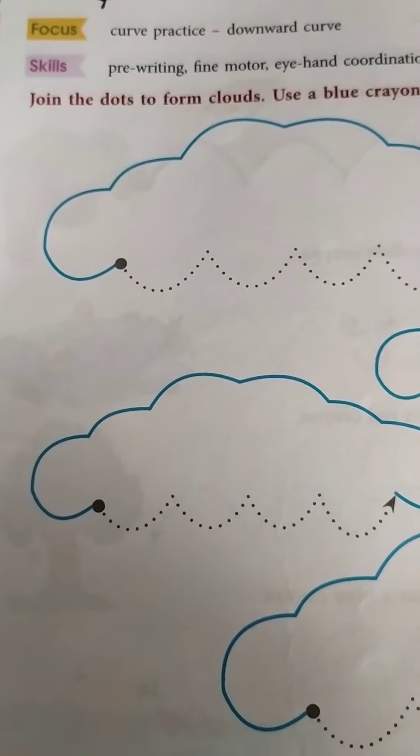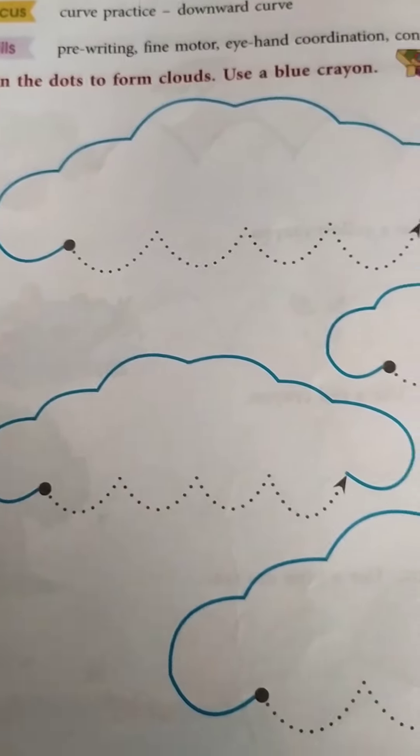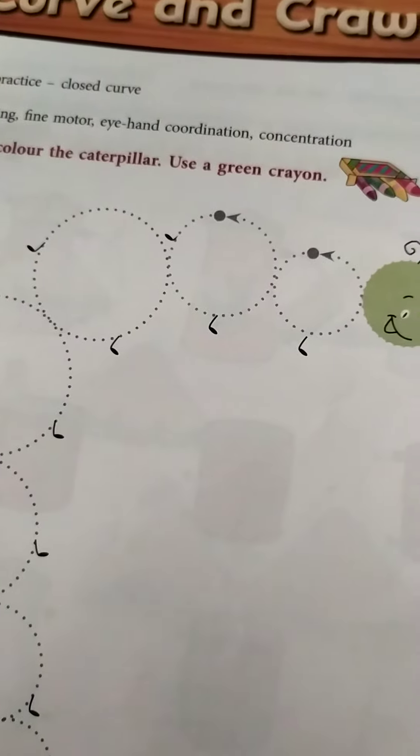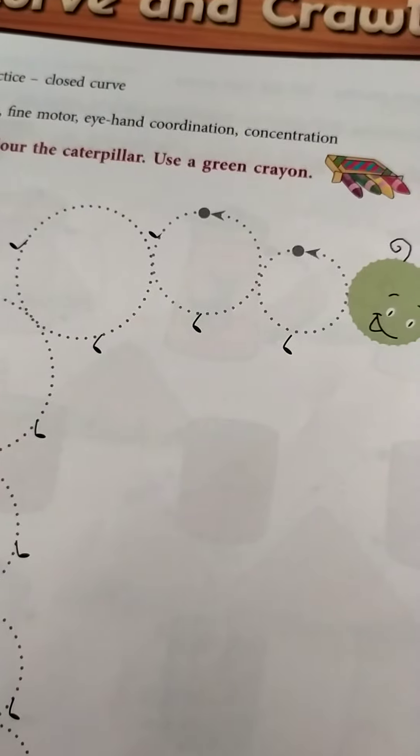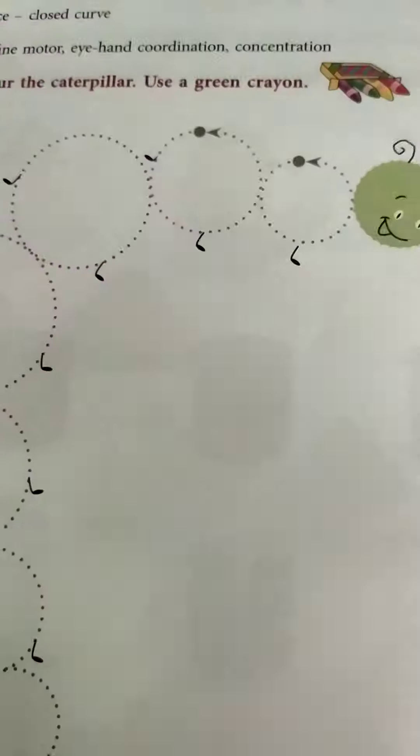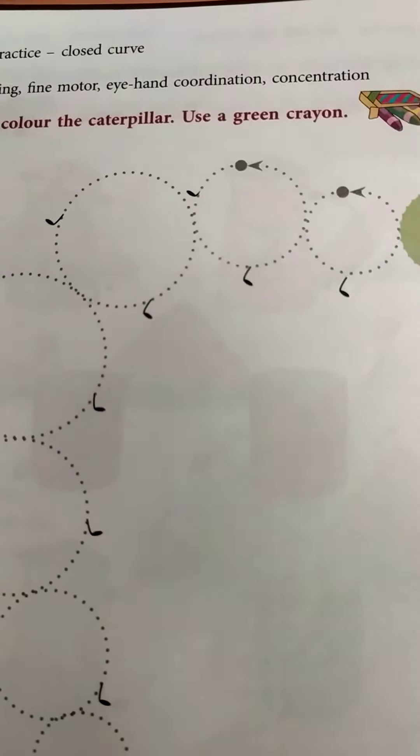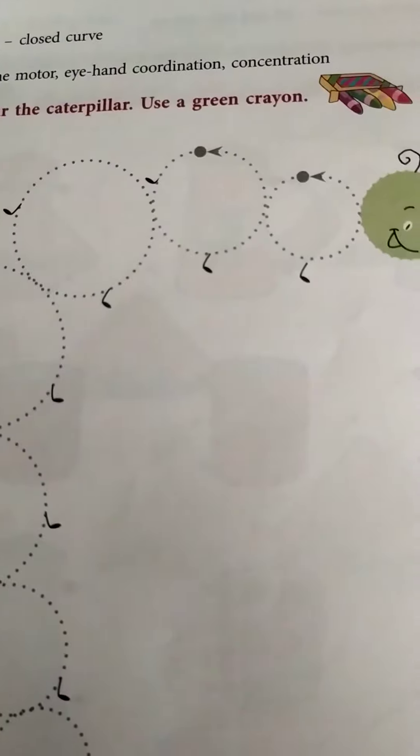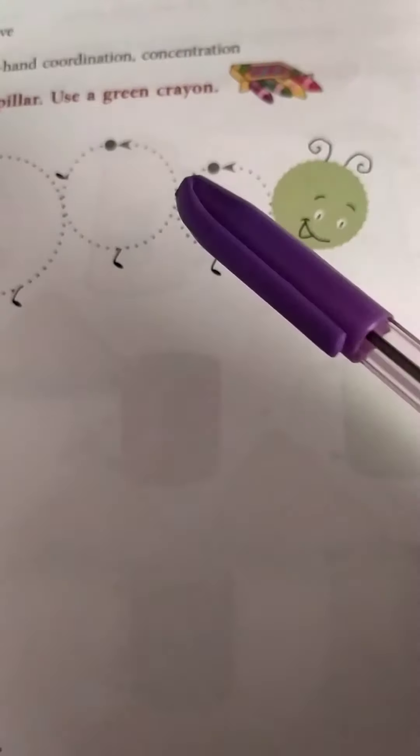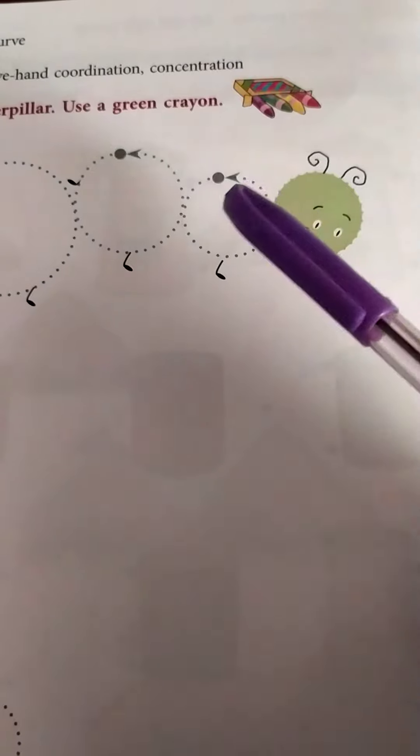up curve, down curve. It is down curve children. And this is circle, closed curve. What is this children? Closed curve. That means right open curve and go up and join the curve, so it is a closed curve. You can see here, we call it as a closed curve.